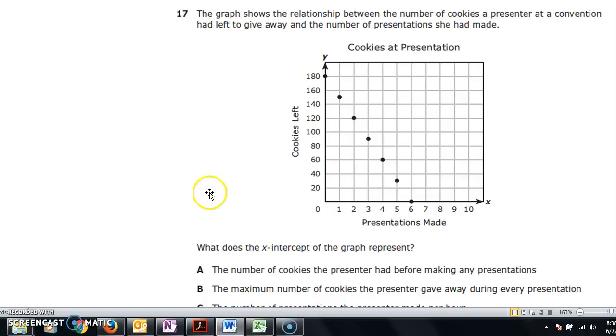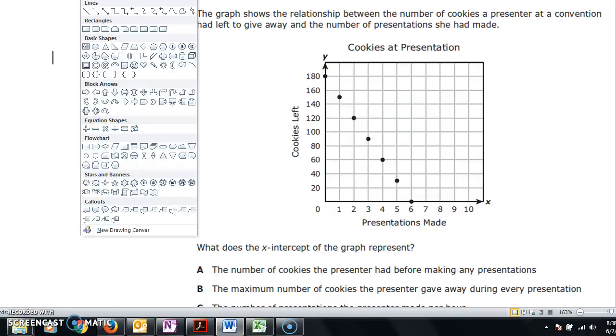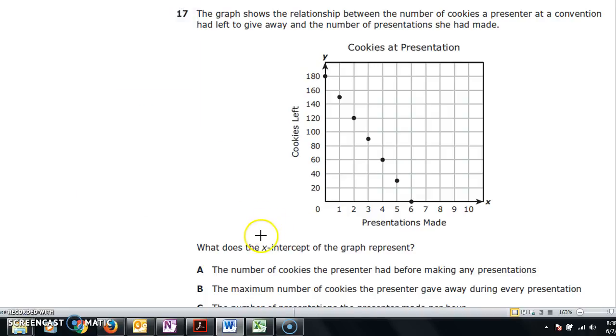Here's the actual question. What does the x-intercept of the graph represent? We need to make sure we know what that means. X-intercept is wherever your graph crosses the x-axis.